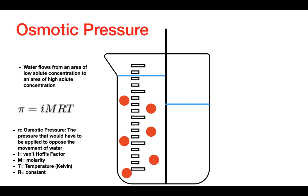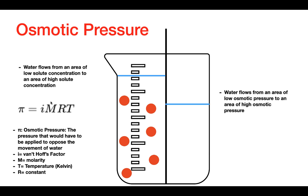Another variable is M, which represents molarity. T represents the temperature, and R is a constant. From this equation we can see that osmotic pressure is going to increase when we increase the concentration of solutes.